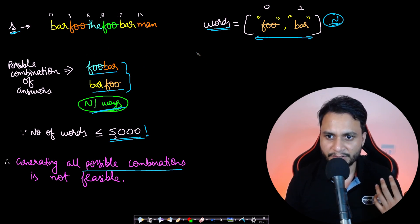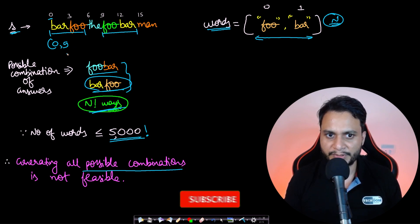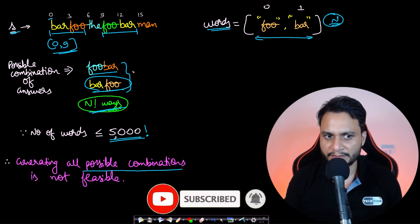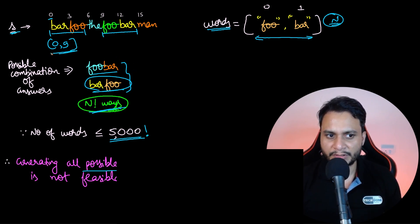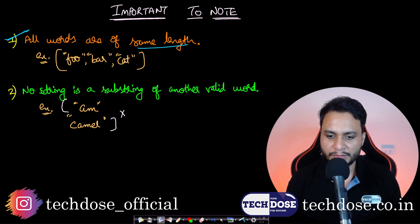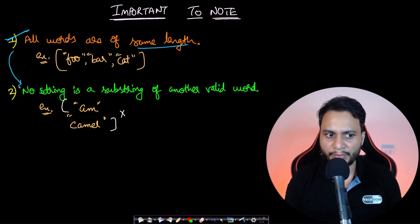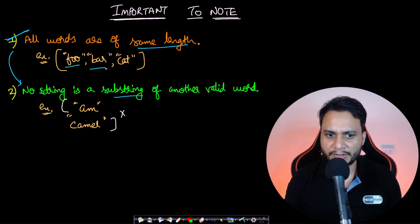'bar foo' matches starting at index 0, so we append index 0. 'foo bar' matches starting at index 9, so we append index 9. That is the answer — we return all starting positions as an array. Two important points: all words are of the same length, and since they are all the same length, no word can be a substring of another word in the list.